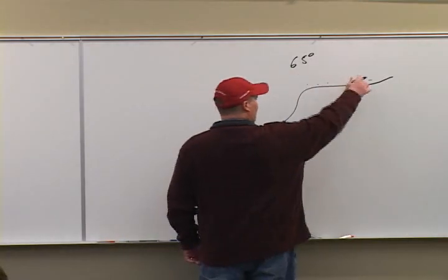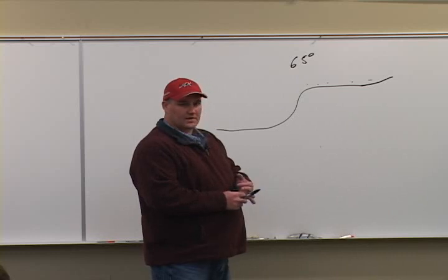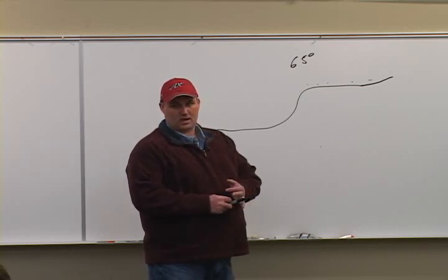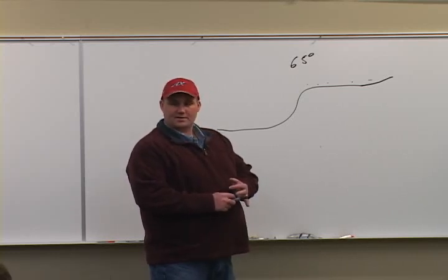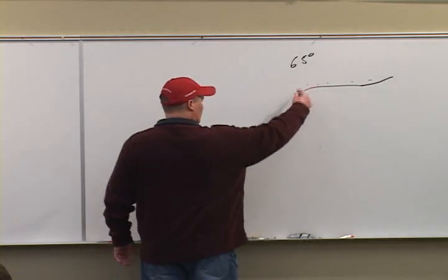If I go in there at 65 degrees and start casting these baits, I'm going to catch small walleyes and I'm going to catch a ton of smallmouth bass. If you're getting that, it means you're fishing too shallow.